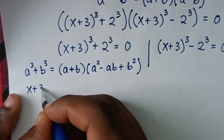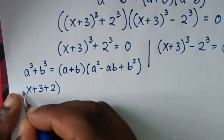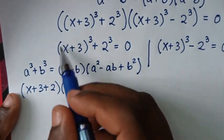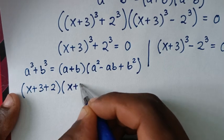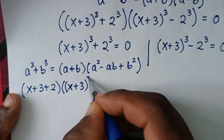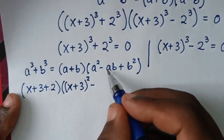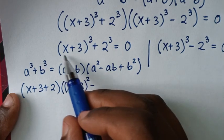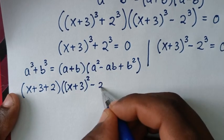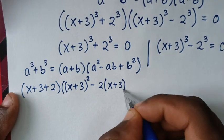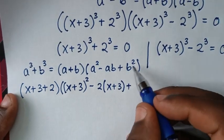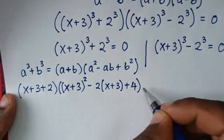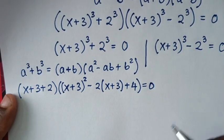Applying this form: (x + 3 + 2) times [(x + 3)² minus (x + 3) times 2, which is 2(x + 3), plus 2², which is 4] equals 0.